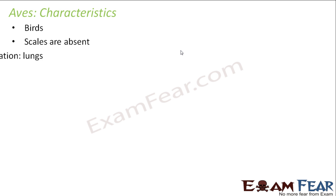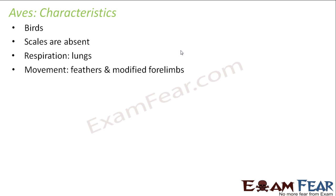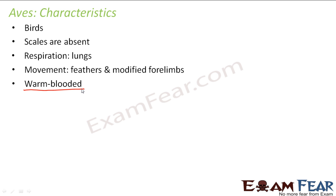In birds, scales are absent — no scales. Respiration is through lungs. Movement is through feathers and modified forelimbs. Birds generally fly, and they can also walk. They have feathers and their forelimbs are also modified for this purpose. They are warm-blooded, which means they tend to keep their body temperature constant. If the surrounding temperature is very high, they try to cool themselves — perhaps by moving their feathers. Similarly, if the outside weather is very cold, they try to increase their internal body temperature and warm themselves with the help of feathers.